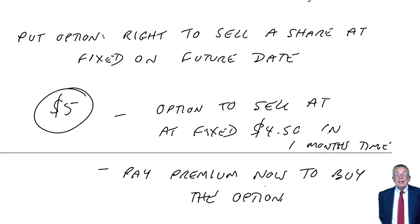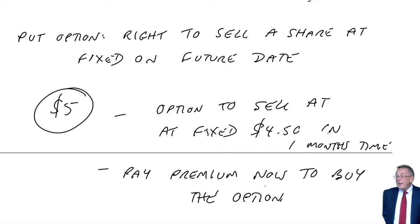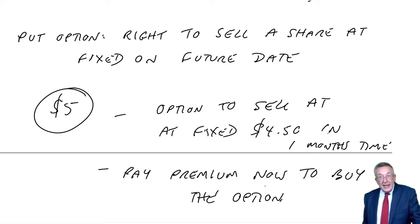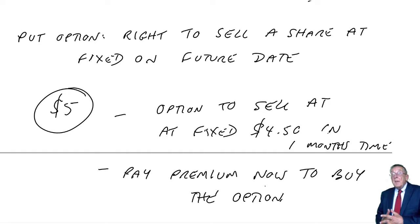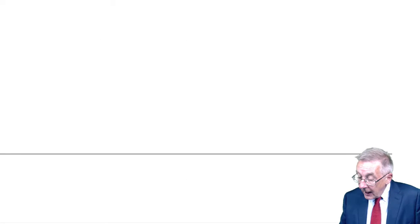Maybe they're charging 20 cents or something. I may end up losing it — if the price in a month's time is higher than $4.50, I'll throw the option away and sell at the higher price, but I'll still have paid the premium. In that sense it's a little bit like insurance — I pay the premium, I might end up having wasted money, but at least it ensures I can sell them for at least the exercise price of $4.50. So those are share options; they are traded on the stock exchange. For major companies you can buy call options — the right to buy at a fixed price — or put options — the right to sell at a fixed price.